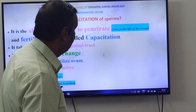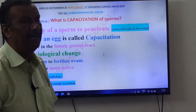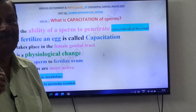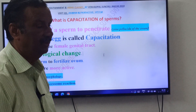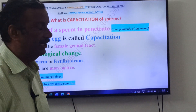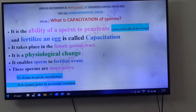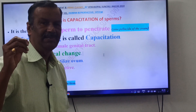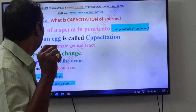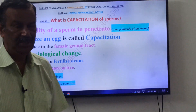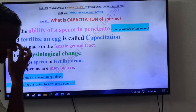Here there is a NEET question — the sperm penetrates the Zona Pellucida of the Ovum. Zona Pellucida is the layer which is present around the Ovum. So the Sperm penetrates Zona Pellucida. Once again: the ability of a Sperm to Penetrate and Fertilize an Egg is called Capacitation.